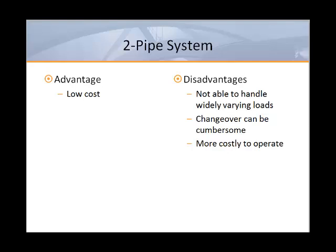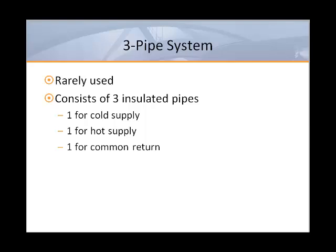The advantage of a two-pipe system is that it has half the piping of a four-pipe system and therefore a lower cost in copper piping. However, some disadvantages are that the unit can only heat or cool but not both simultaneously. If parts of the building need heating while other parts need cooling, this can be a problem. Three-pipe systems have separate chilled and hot water supplies but a common return. These systems are rarely used because they consume more energy due to excessive mixing of the chilled and hot water in the common return pipe.